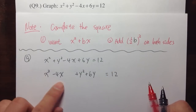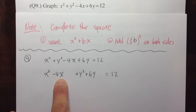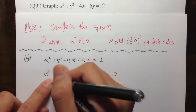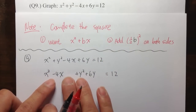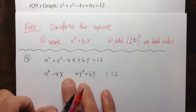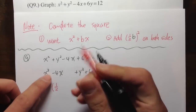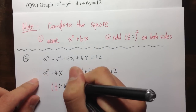For the x, I have x squared minus 4x. What I need to do is take one half of negative 4 and then square that, and add that number on both sides. So I need to take one half times negative 4, which is the b value, and then square that.